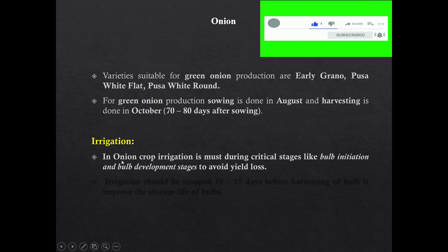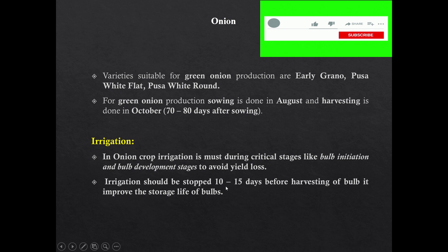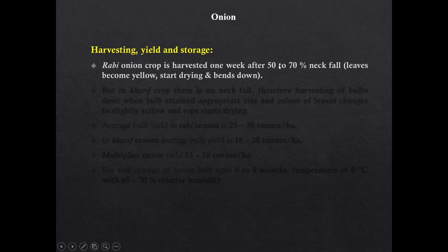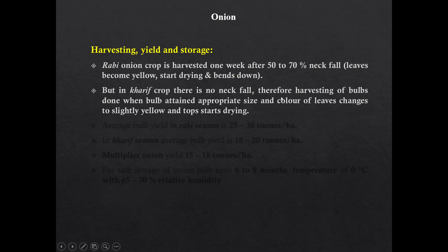In onion crop, irrigation is essential at critical stages like bulb initiation and bulb development. Irrigation should be stopped 10 to 15 days before the harvesting of bulb — this helps increase storage life and prevent sprouting. The rabi onion crop is harvested one week after 50-70% neck fall, that is when leaves become yellow and start drying and bending down. In kharif crop there is no neck fall; therefore harvesting of bulb is done when the bulb attains appropriate size and color of leaves changes from green to slightly yellow and the top starts drying.